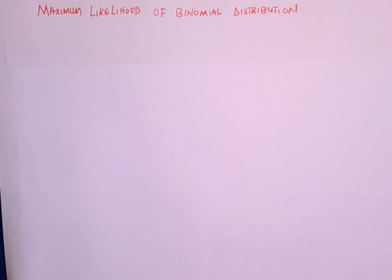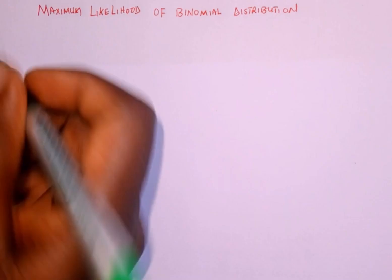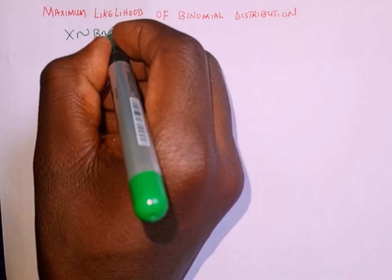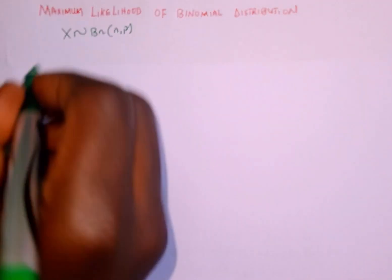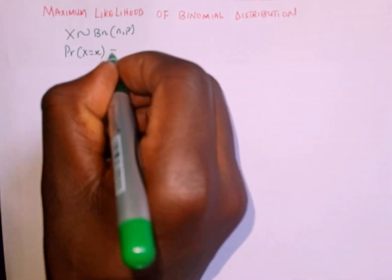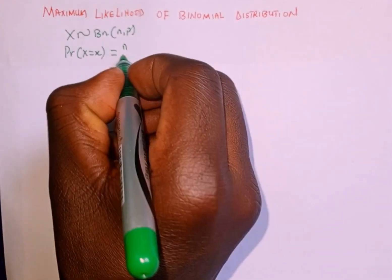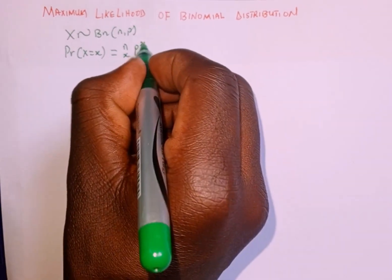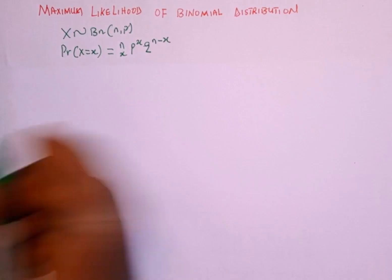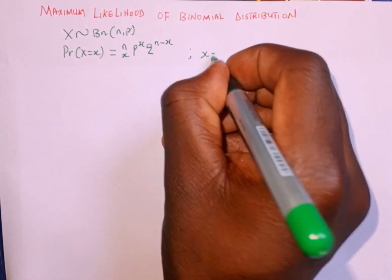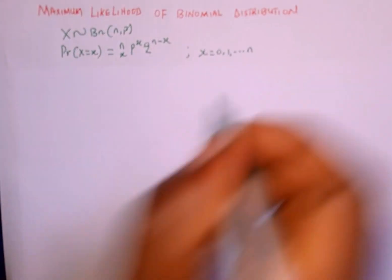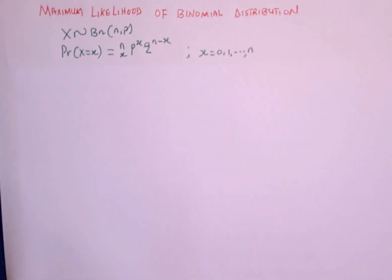A binomial distribution — the distribution function of x — x is distributed binomial with parameters n and p. The probability function P(X = x) is equal to n-combination-x, multiplied by p raised to the power of x, multiplied by q raised to the power of n minus x. And x is distributed from 0, 1, up to n. So this is the distribution function of a binomial.